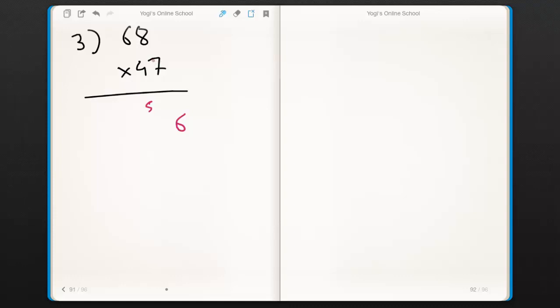Now cross multiplication. 7×6 is 42, 8×4 is 32. Their addition gives us 74. So write 4 and take 7 as carry.